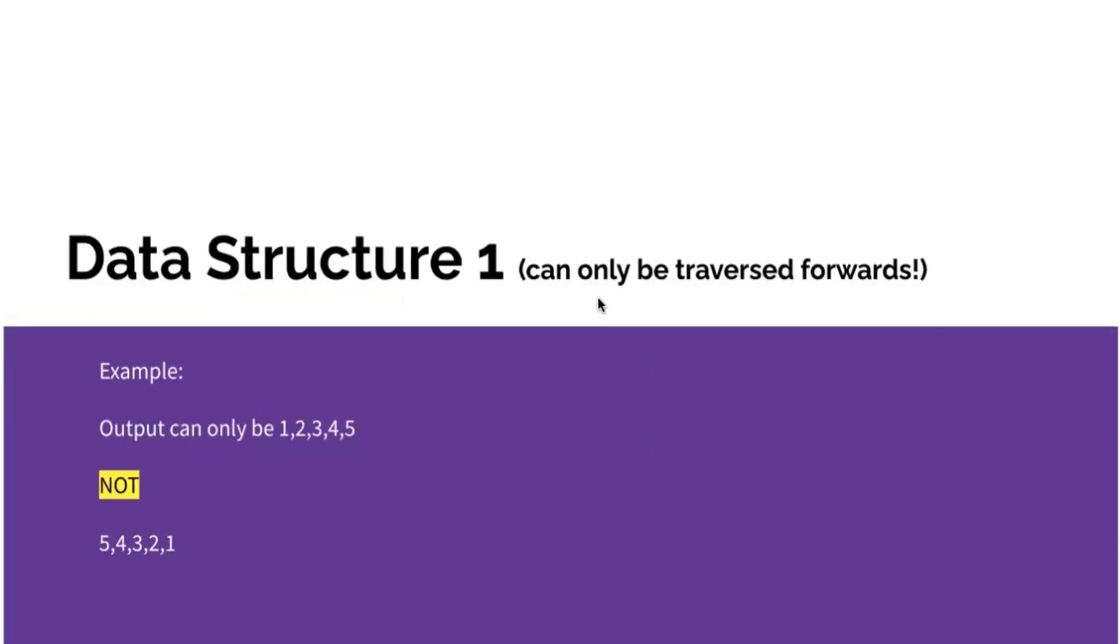Now we will be moving on to data structure one, or otherwise known as singly linked list. In the data structure one, you can only traverse forwards.